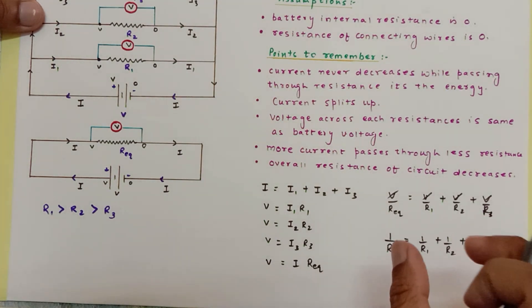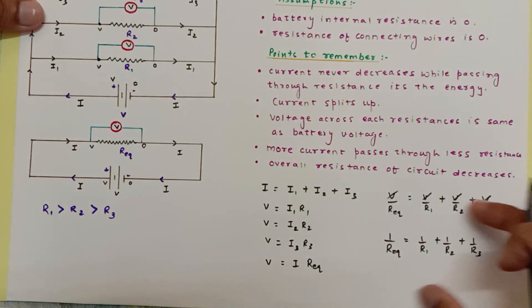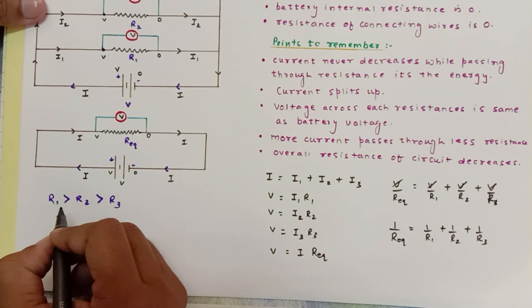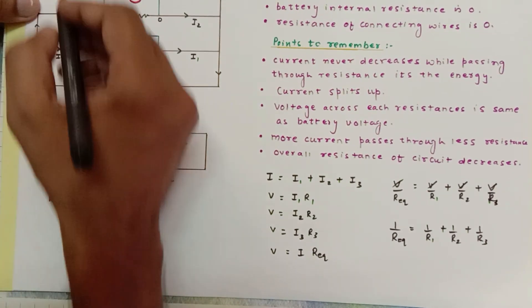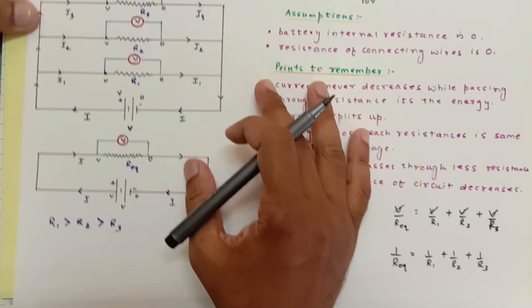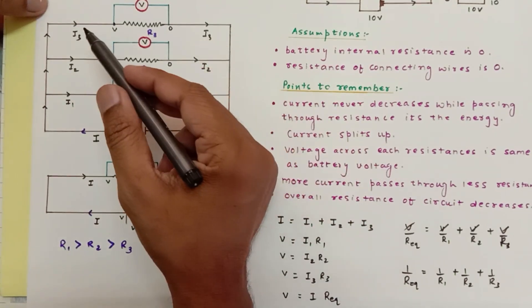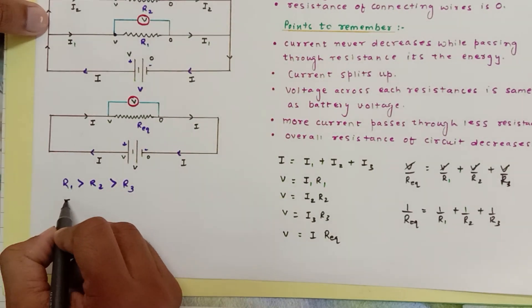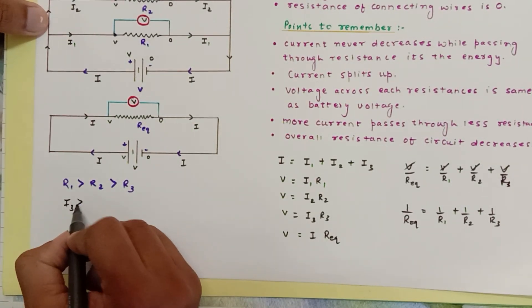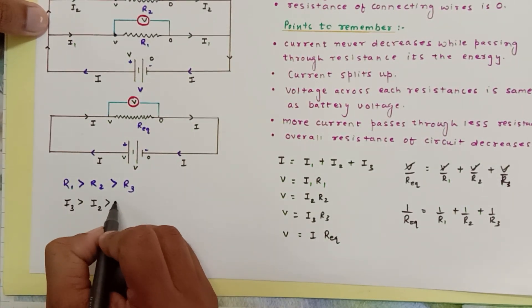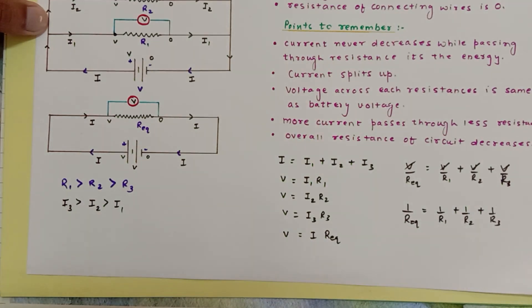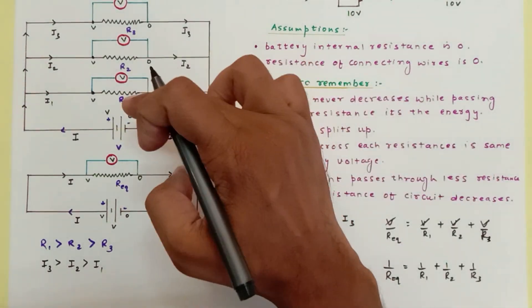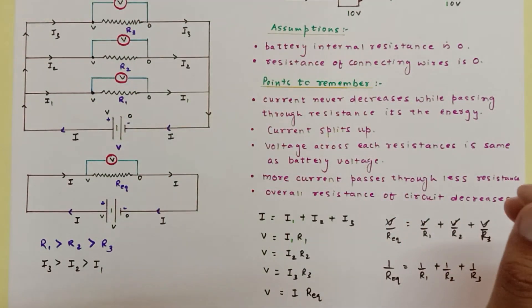So when resistances are connected in parallel, they must be added using this reciprocal formula. Among I1, I2, and I3, the highest current is I3 because R3 has the lowest resistance. So I3 > I2 > I1. Higher resistance means lower current in that branch — but the potential difference across all the resistors remains the same.